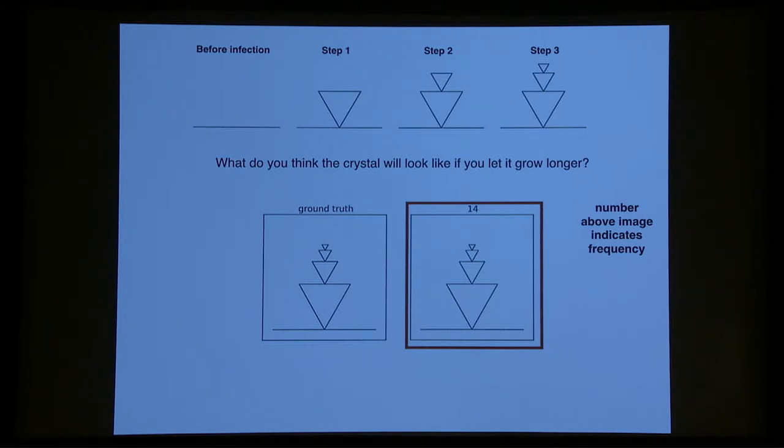I'll show you just some individual trials. Here's an example of this concept, which is quite simple. It's a triangle stacking concept, and it's the stepwise condition. The ground truth is shown at the bottom, where you add an additional triangle on top. And 14 people, which is everyone in this condition, were able to produce the right instance here, were able to generate the right example.